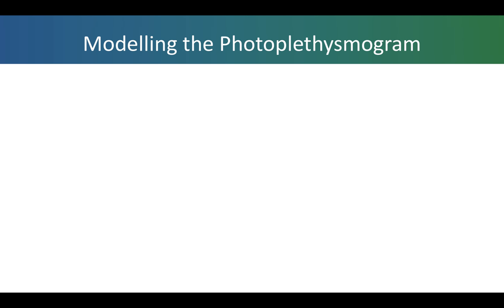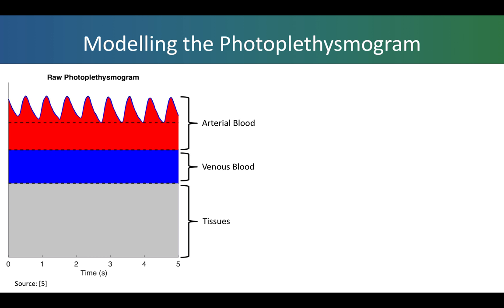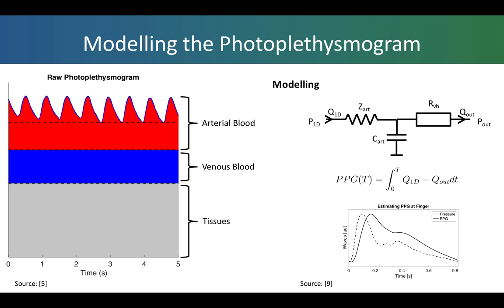A novel aspect of this work is simulating the photoplethysmogram or PPG signal. The PPG signal is obtained by shining a light onto a tissue such as the finger and measuring the light which is either transmitted through or reflected from the tissue. This varies with each heartbeat as the volume of arterial blood in the tissue changes. The attenuation of light due to the venous blood and other components of the tissues remains relatively static. In this study, the PPG was modelled by calculating the volume of blood stored in the terminal windkessels.